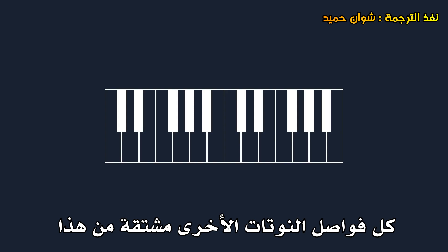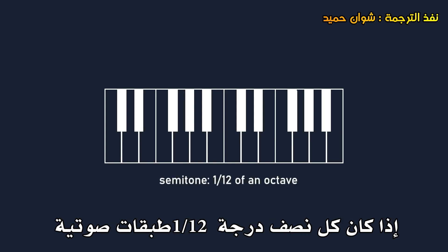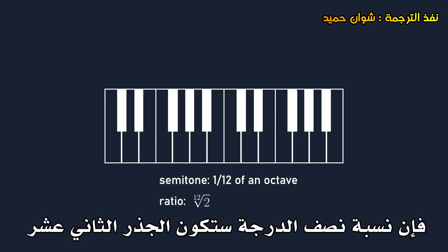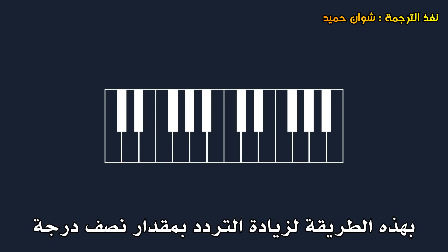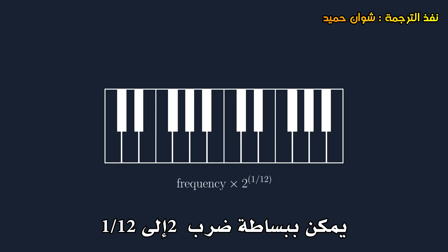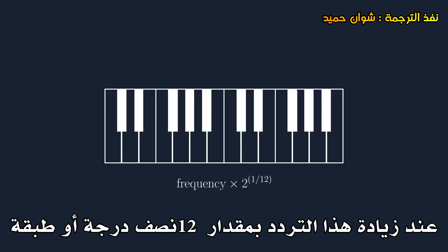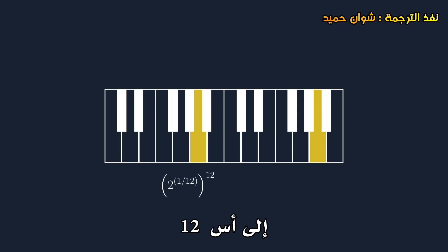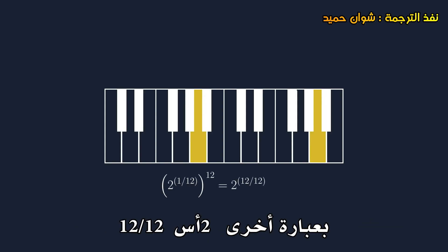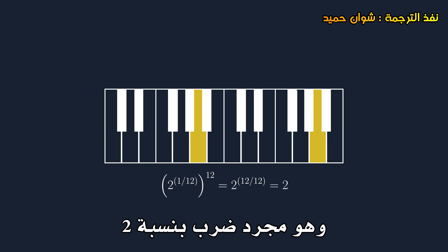All other note intervals are derived from this. If each semitone is 1/12th of an octave, the ratio of a semitone would be the 12th root of 2, or 2 to the power of 1/12. This way, to increase a frequency by one semitone, it can simply be multiplied by 2 to the 1/12. Increasing that frequency by 12 semitones, or an octave, it would be multiplied 12 times, which is 2 to the 1/12 to the power of 12 — in other words, 2 to the power of 12 over 12, which is just multiplying it by 2.